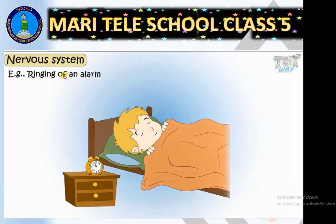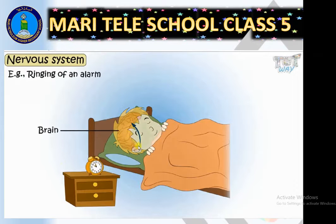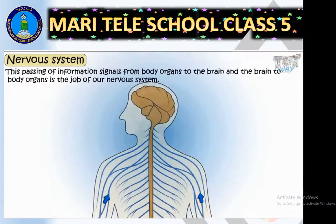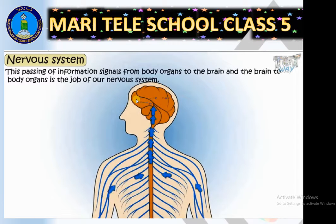For every activity, the nervous system is involved. Let's take another example — the ringing of an alarm. When an alarm rings, the sound passes via the ear to the brain. The brain processes it and sends orders to the hand. We know what happens next: the hand presses the button and stops the alarm. This passing of information and signals from body organs to the brain, and from the brain back to body organs, is the job of the nervous system.